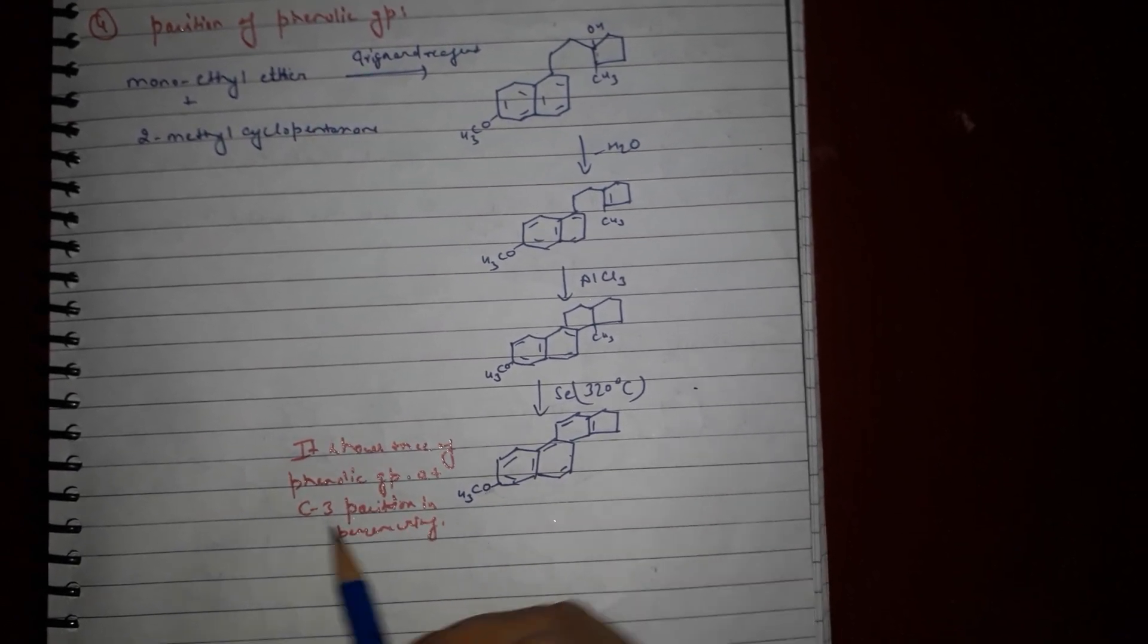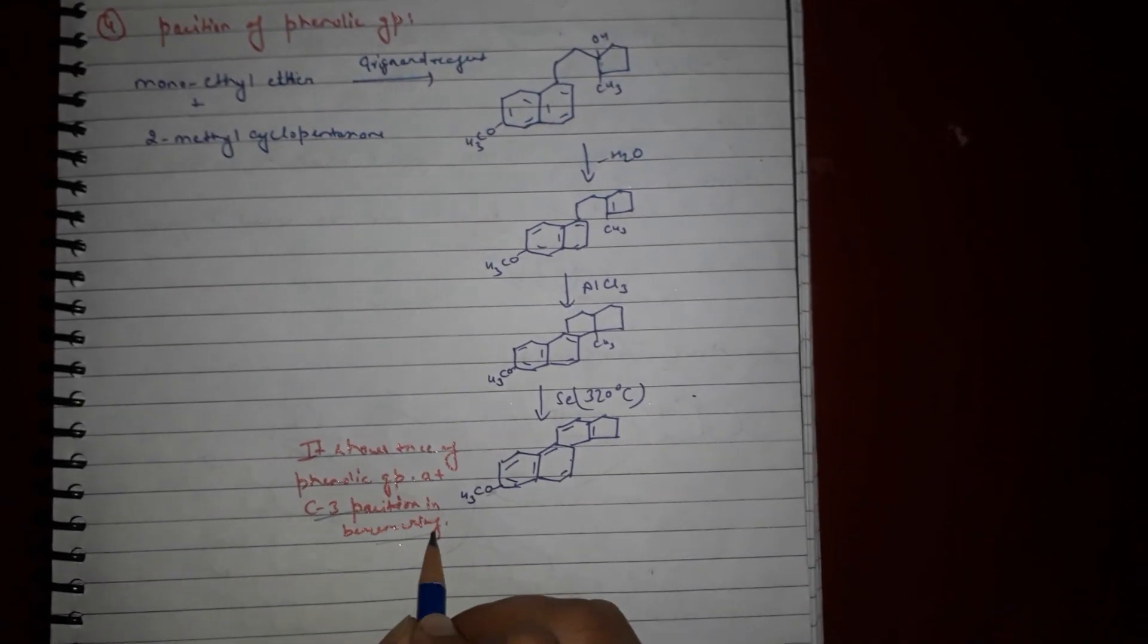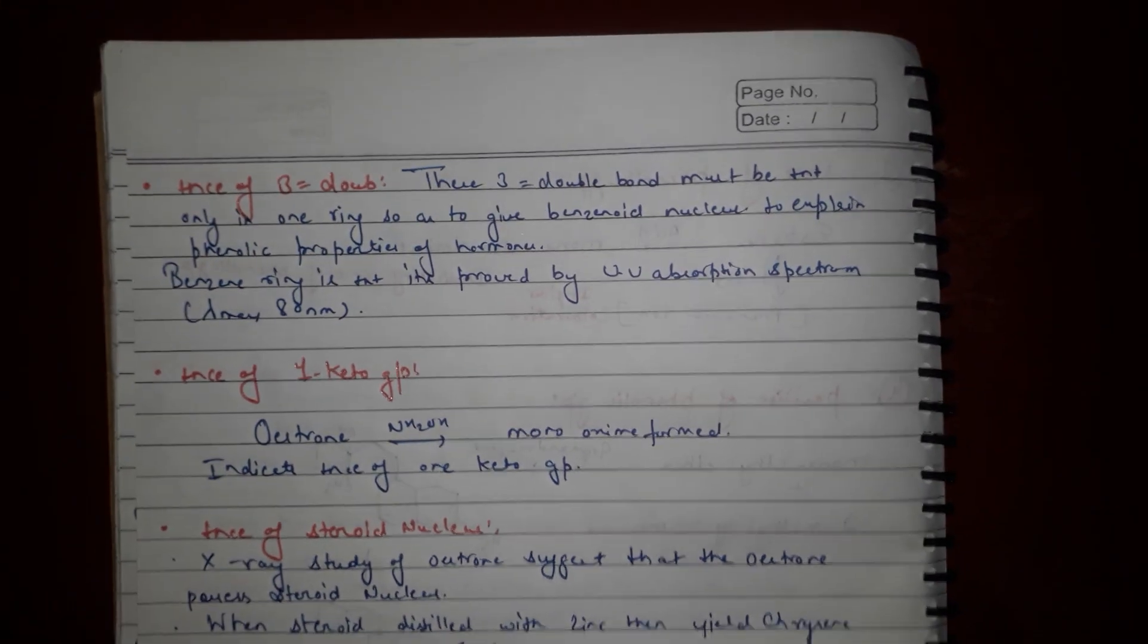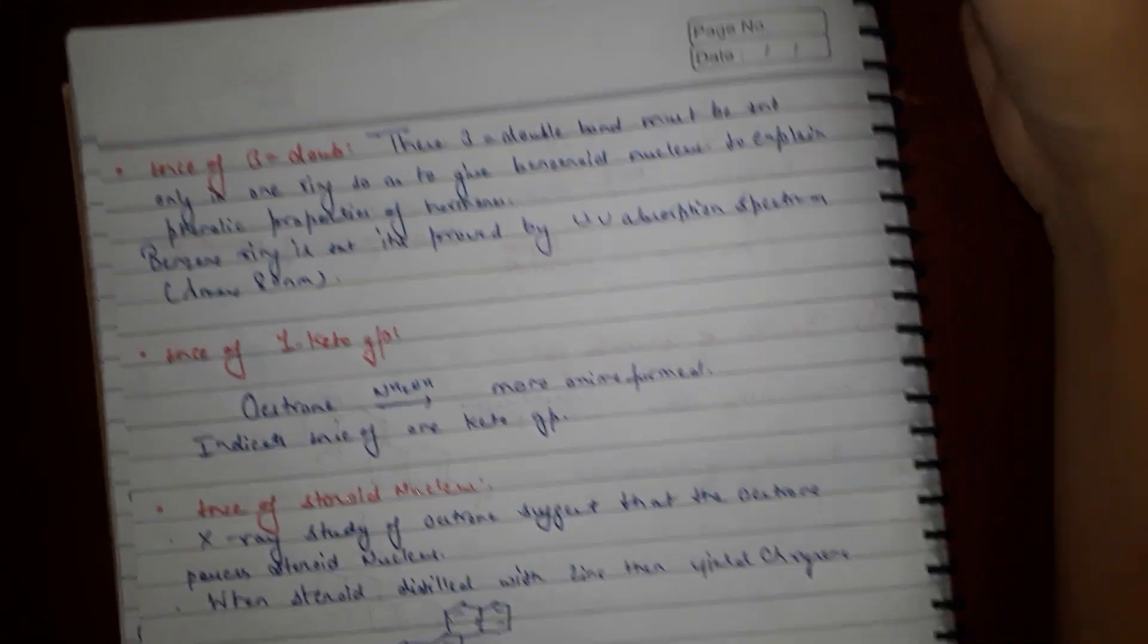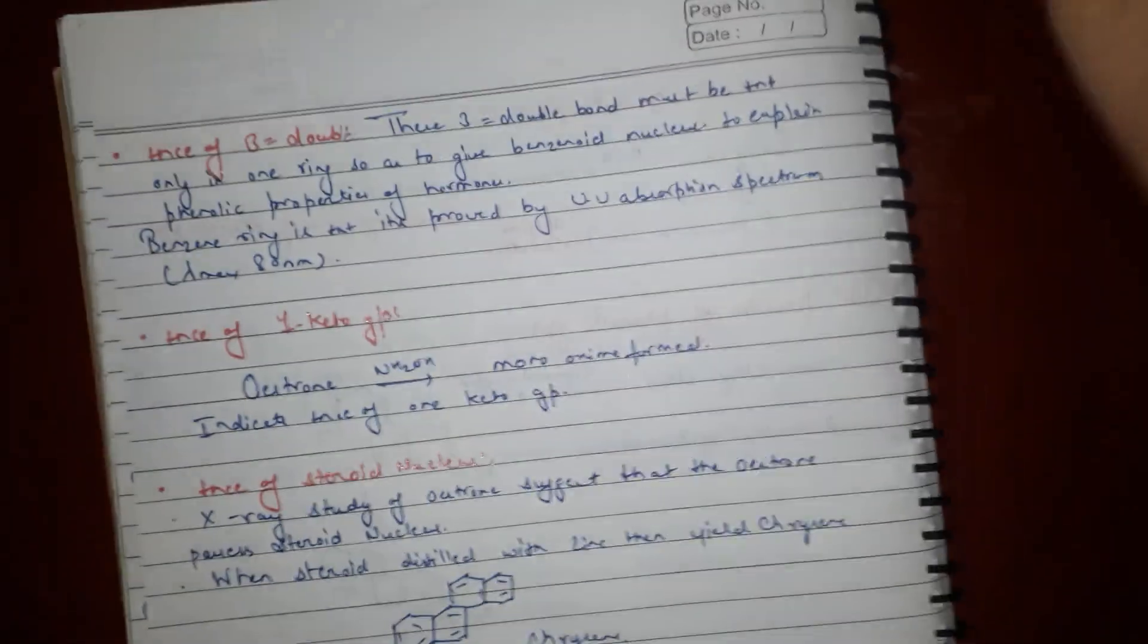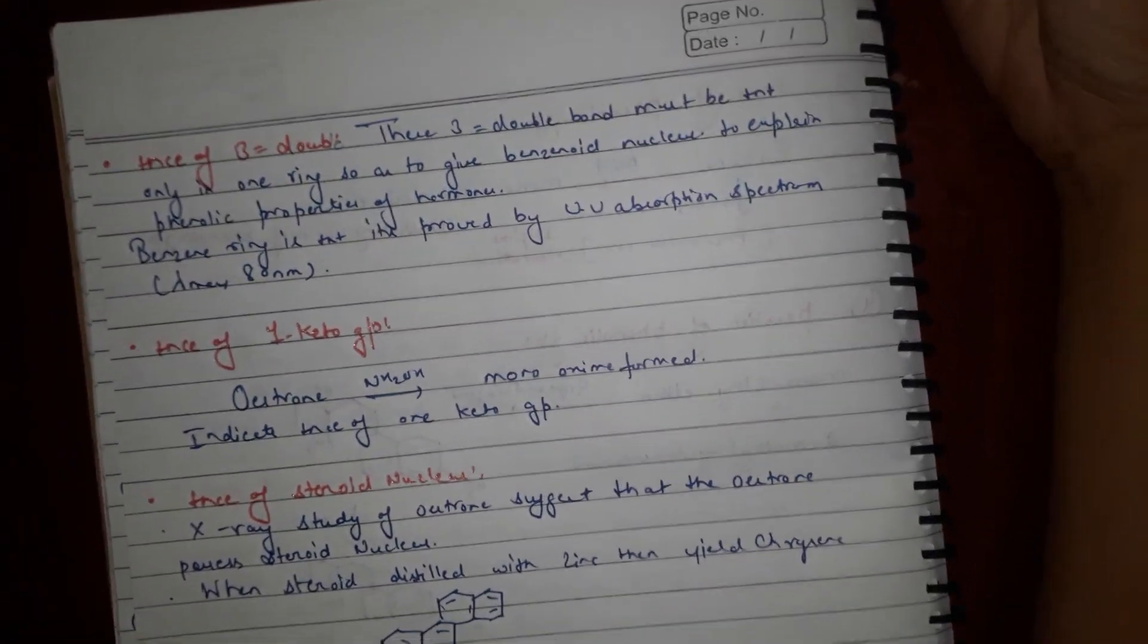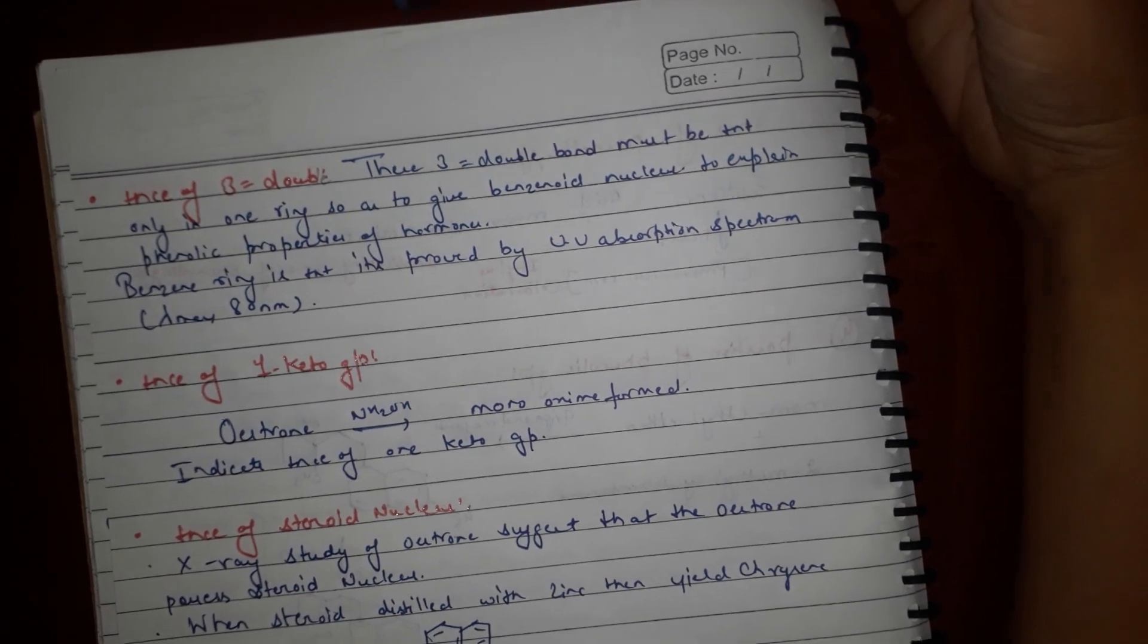This shows the presence of phenolic group at C3 position in ring A. Presence of three double bonds: one in ring A forms a benzoid nucleus, which is proved by UV absorption spectra with lambda max at 280 nanometer.